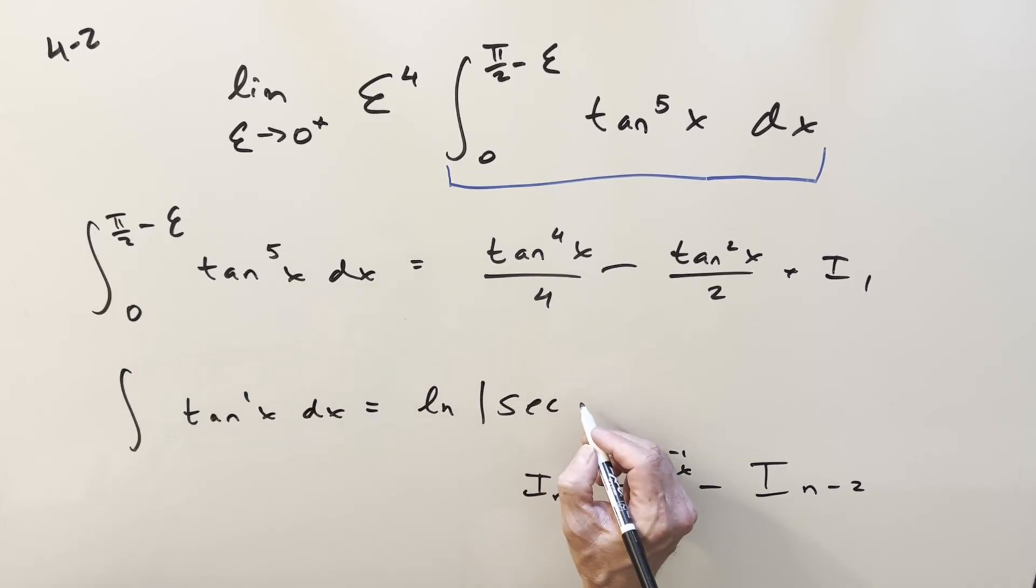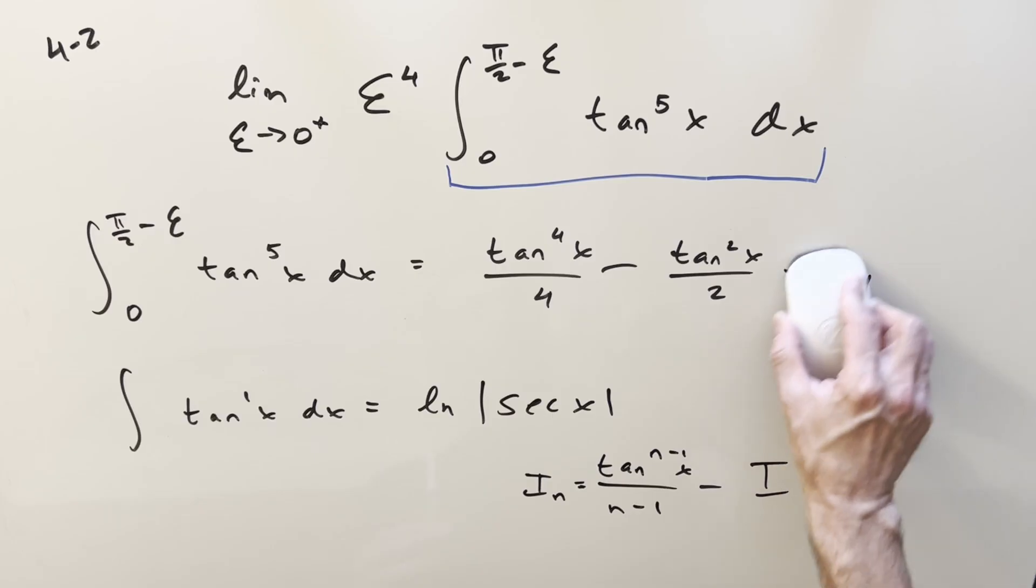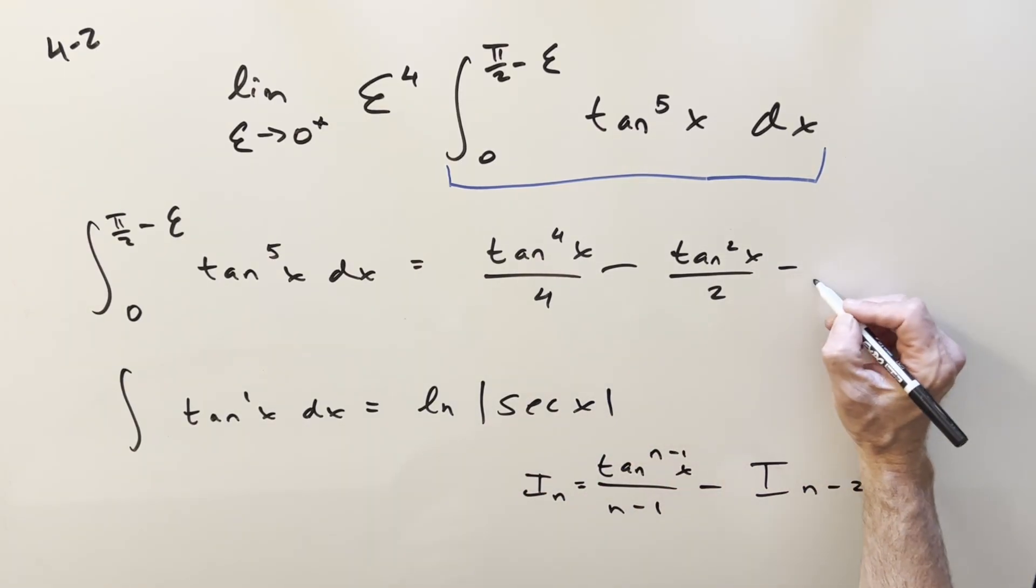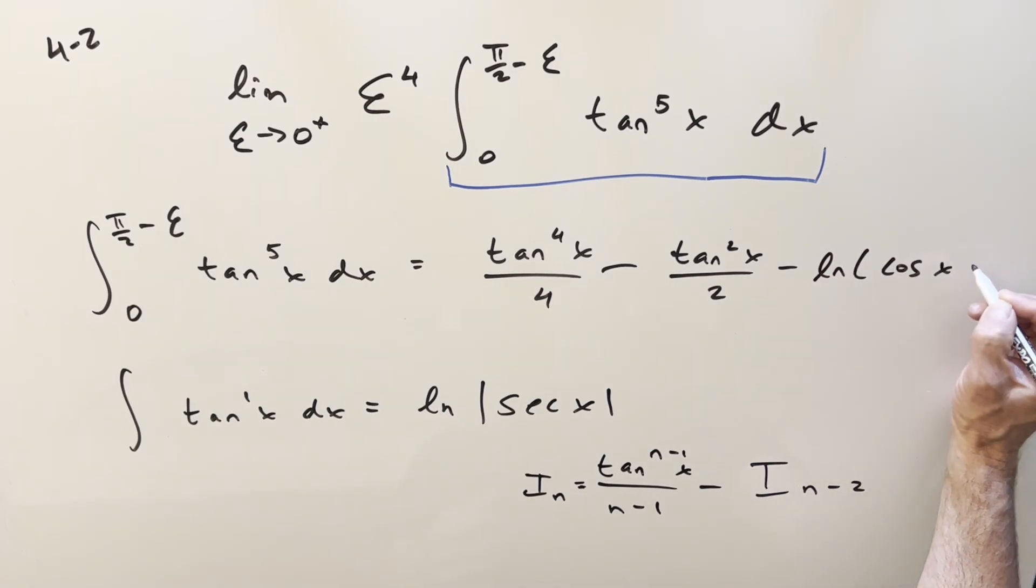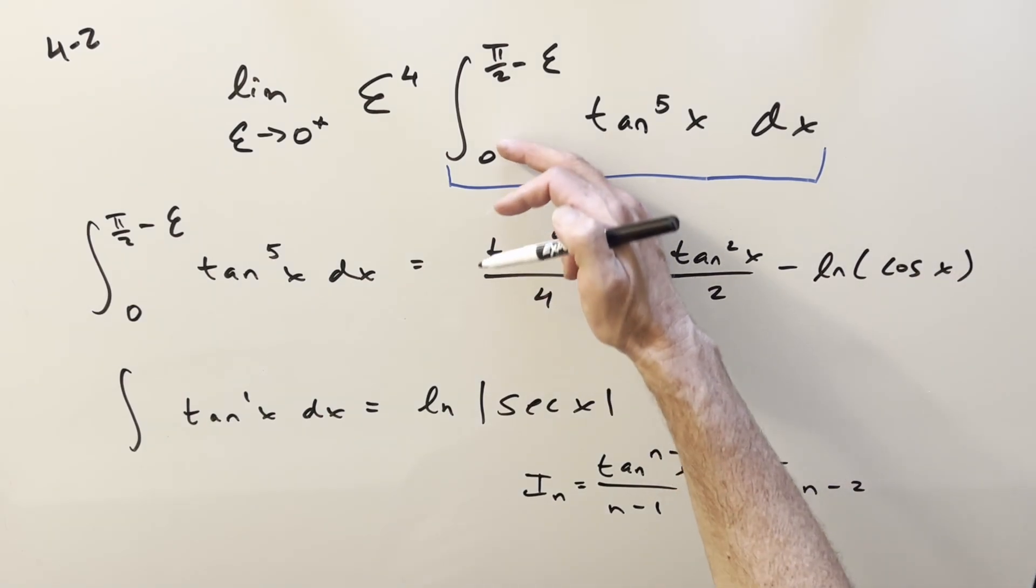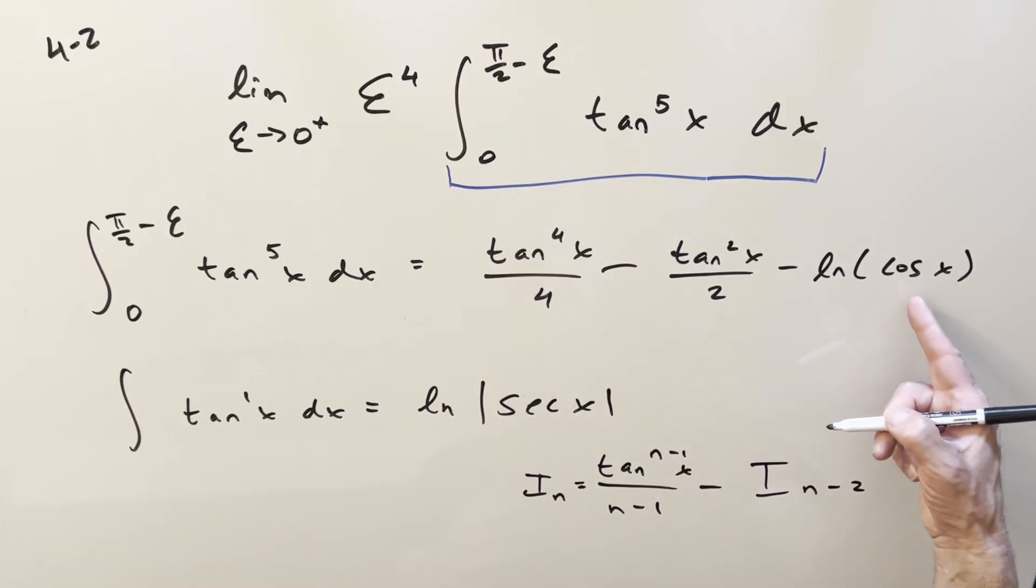So this integral, we know this is a common integral. This is going to be the same thing as natural log secant of x. But I think it's just going to be more convenient for me to write it a little differently this time. Instead of writing it as secant, I'll flip it and write it as minus natural log cosine x. I'm dropping the absolute value because all of our x values are positive.